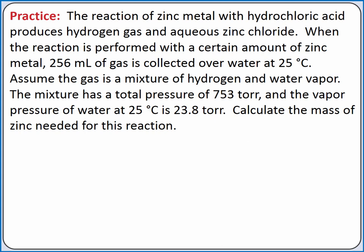Let's practice with this type of problem. The reaction of zinc metal with hydrochloric acid produces hydrogen gas and aqueous zinc chloride. When the reaction is performed with a certain amount of zinc metal, 256 milliliters of gas is collected over water at 25 degrees Celsius. Assume the gas is a mixture of hydrogen and water vapor. The mixture has a total pressure of 753 torr, and the vapor pressure of water at 25 degrees Celsius is 23.8 torr. Calculate the mass of zinc needed for this reaction.